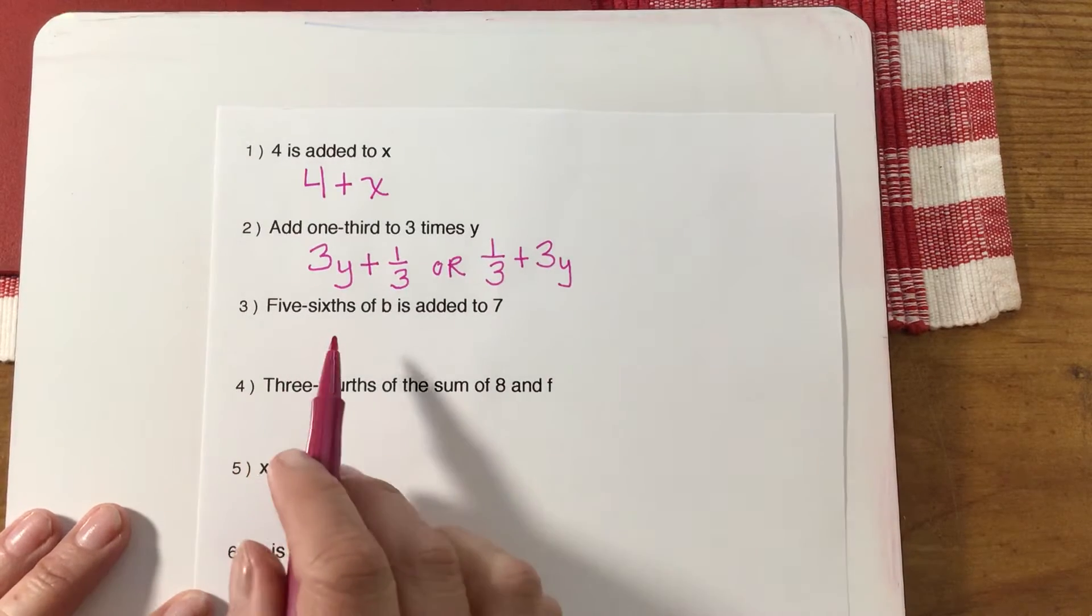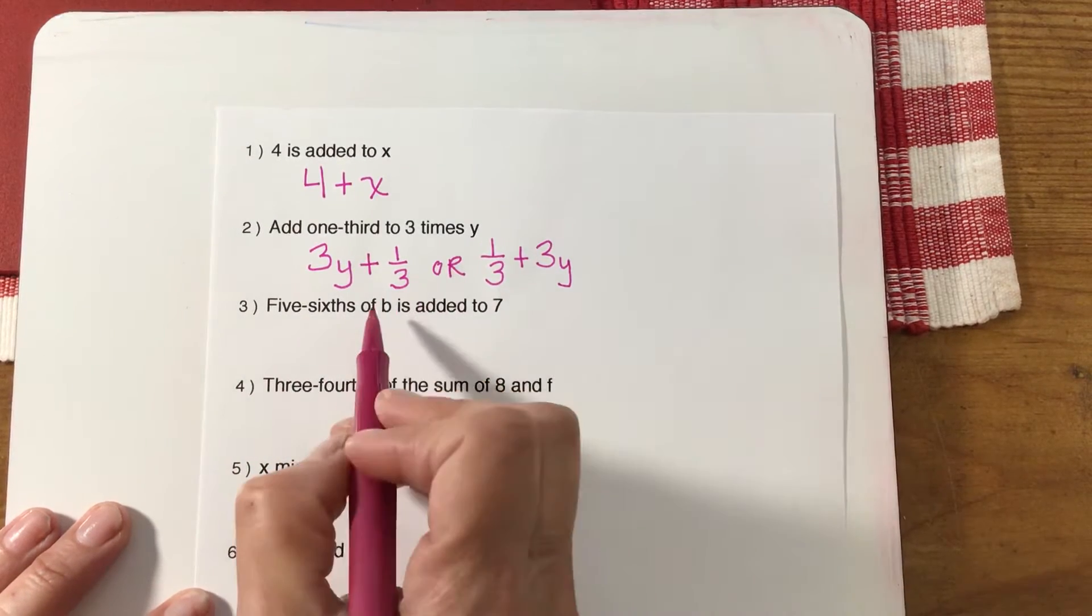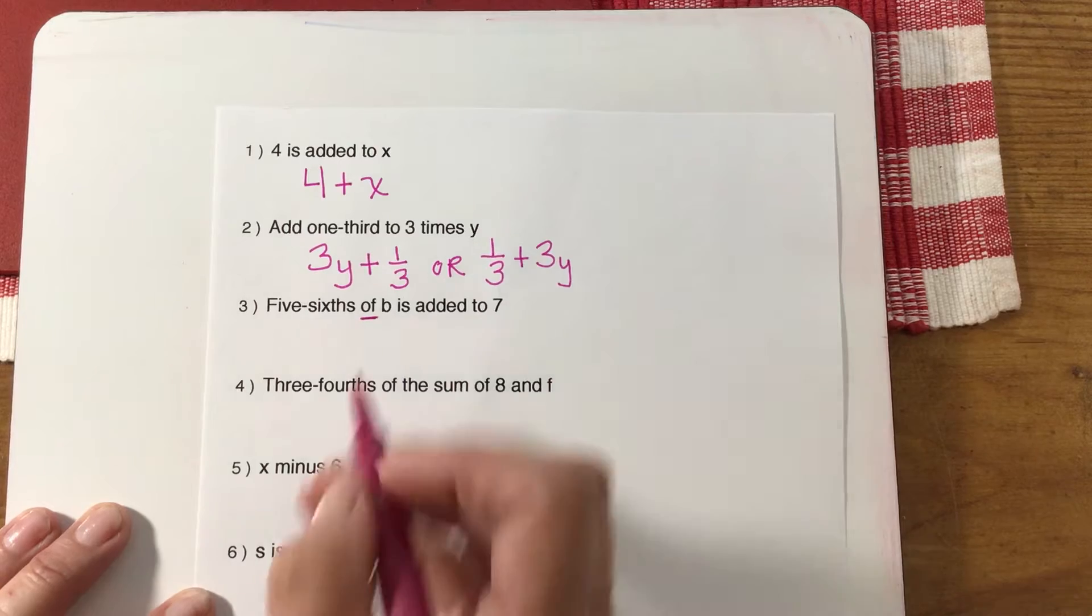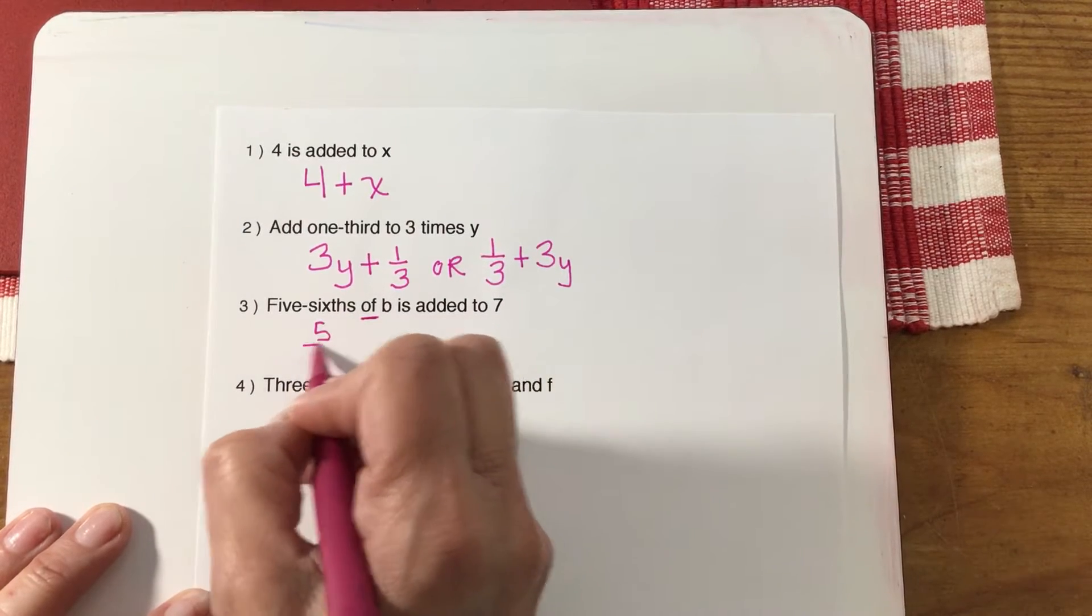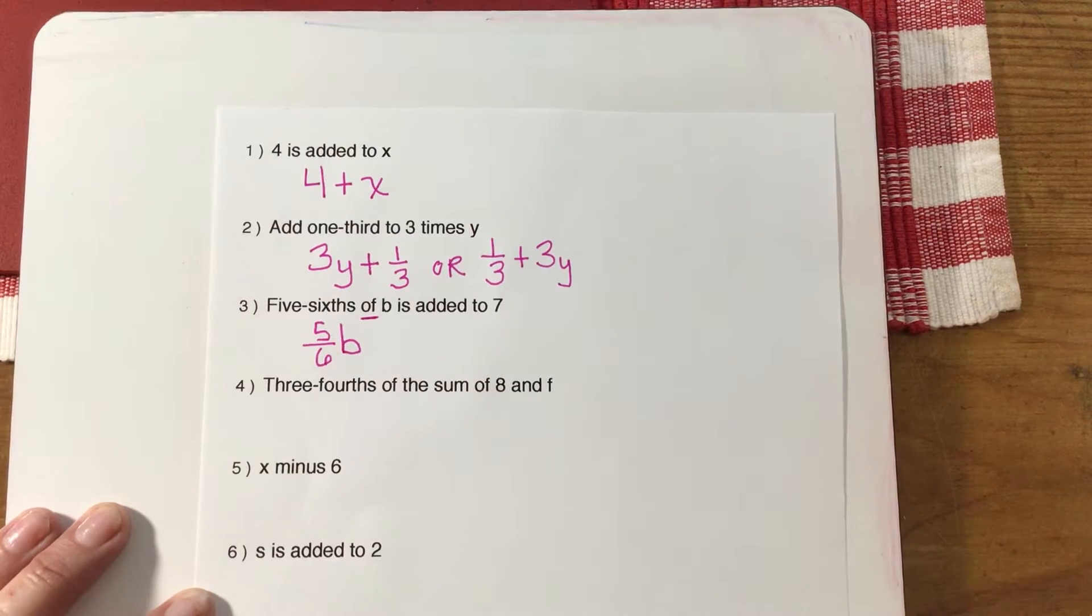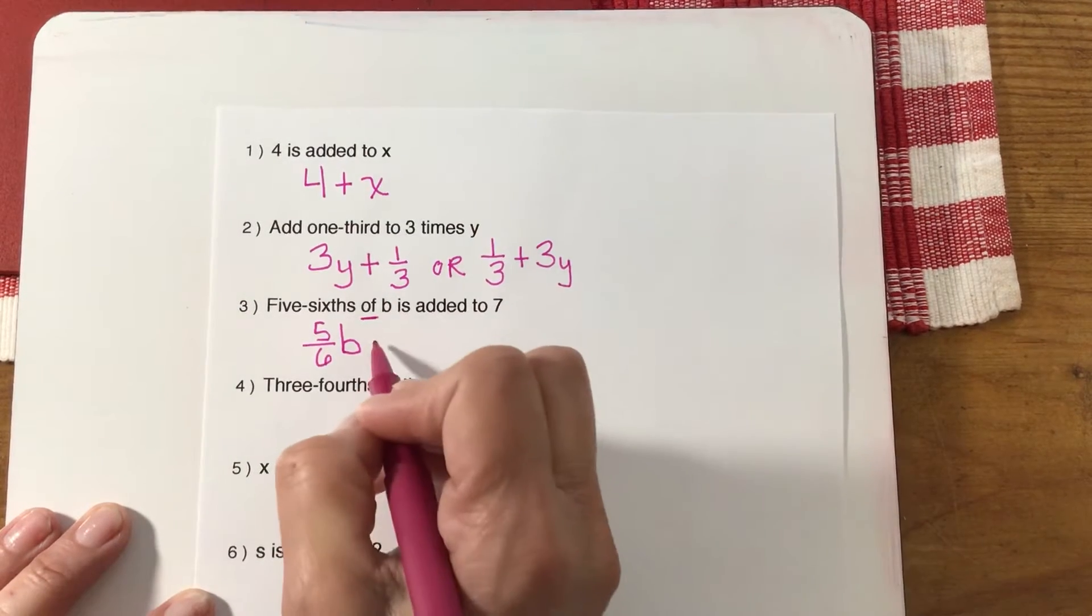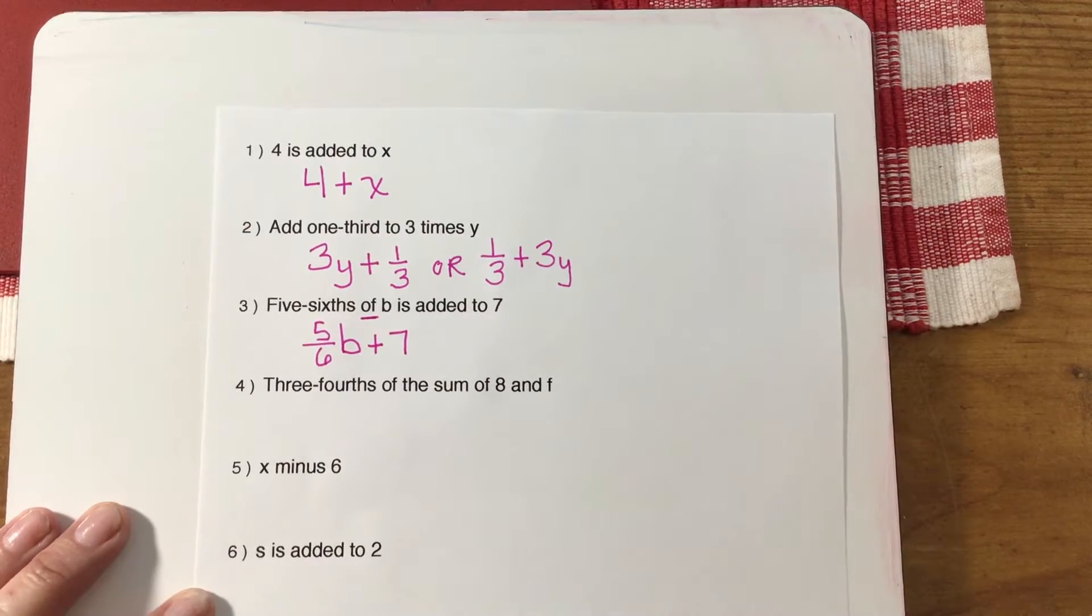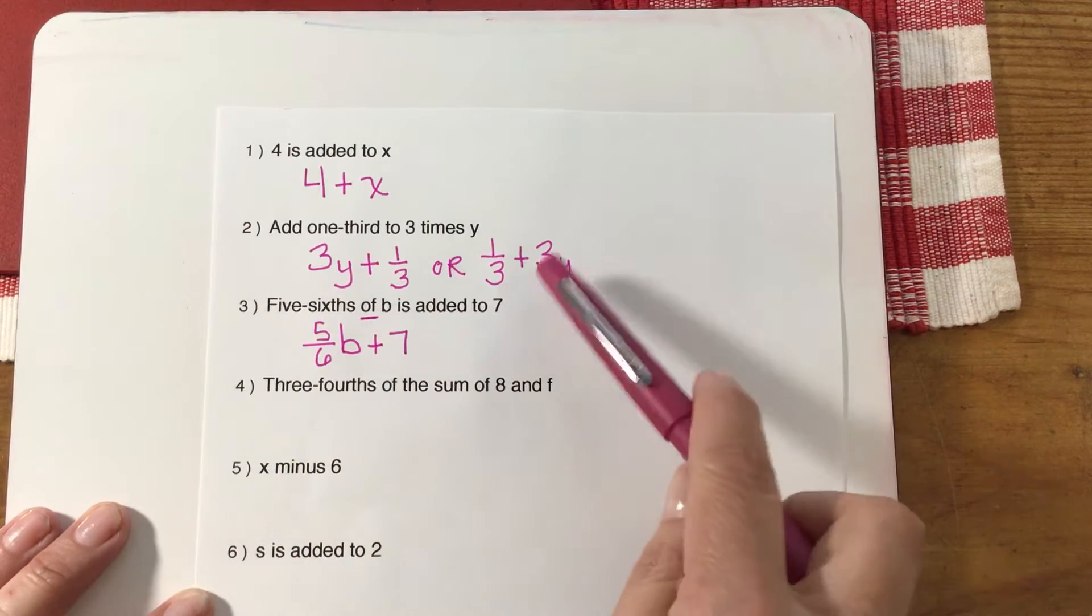Five-sixths of b—wherever you see that word "of" think multiplication. So five-sixths of b is added to seven: five-sixths b plus seven. Again, you could have also turned it around the other way, kind of like what we did up here. Commutative property allows us to do that.